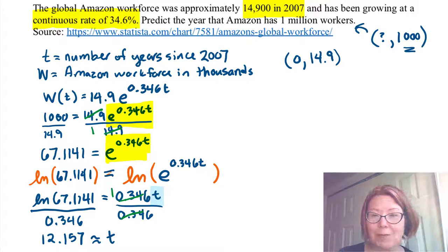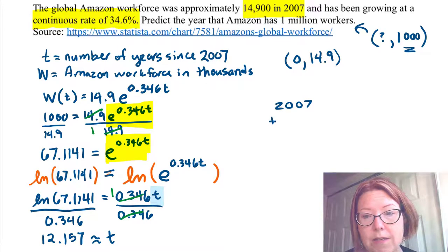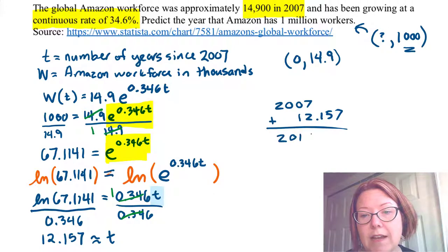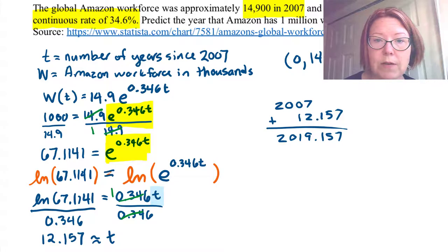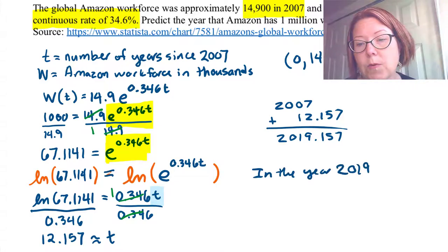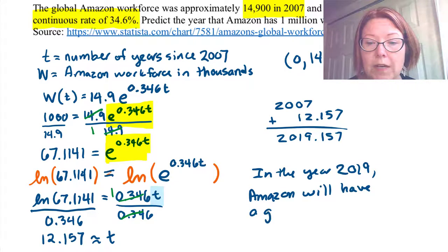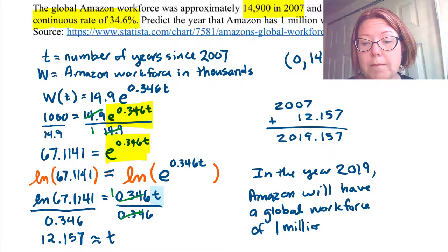And that's 12.157 years after 2007. So if we take 2007 plus 12.157, we will get something in the year 2019, just a little ways into 2019. So to answer our question, in the year 2019, Amazon will have a global workforce of 1 million.